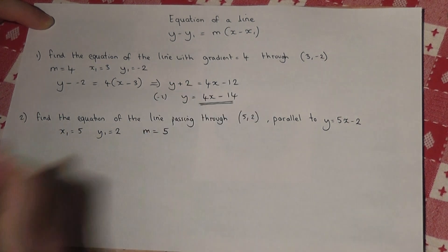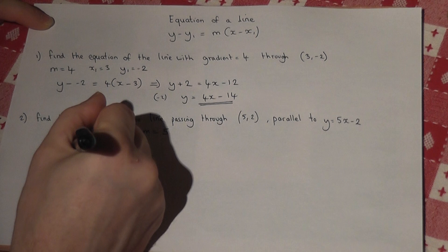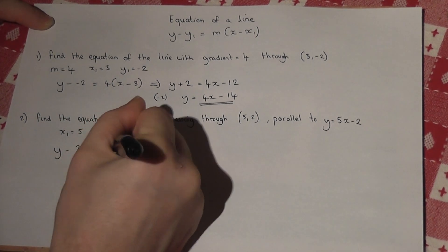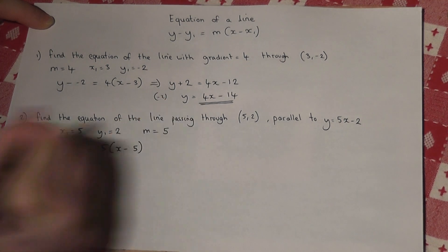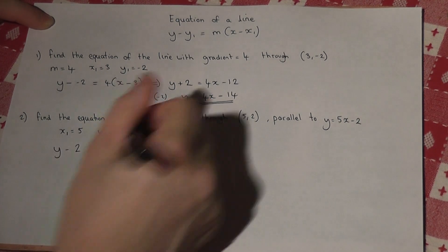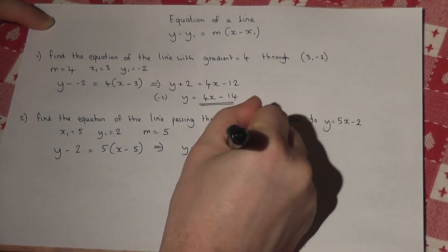To get the equation: y minus y1, which is 2, equals m, which is 5, times (x minus x1), which is also 5. Expanding the bracket: y minus 2 equals 5x take away 25.